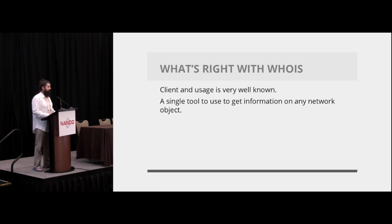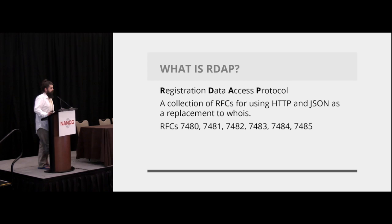Which brings us to everything that's right with WHOIS. We use it every day. I can look up an IP address, I can look up an AS, I can look up a domain. I use the same tool to get the information I want. Which brings us to RDAP — the Registration Data Access Protocol. It essentially takes all the data from WHOIS and provides a standardized method to receive it over HTTP with JSON. There are currently five RFCs and a few drafts.